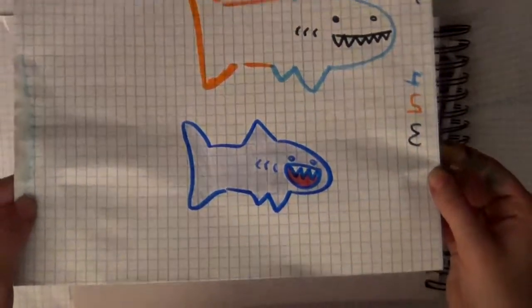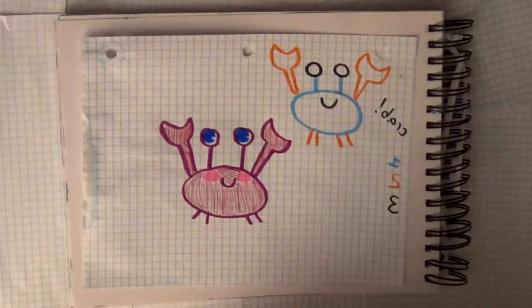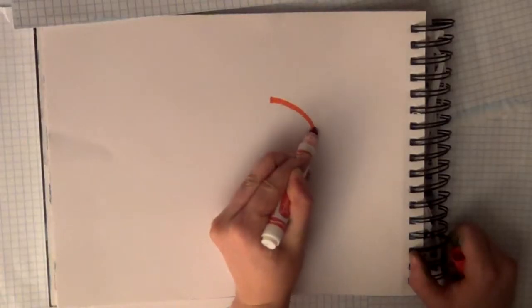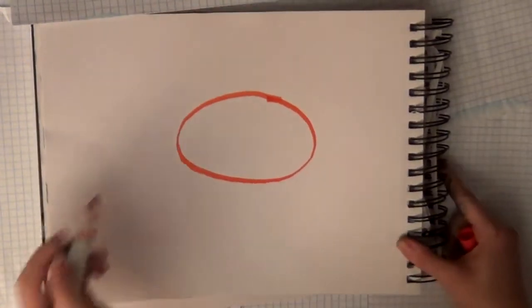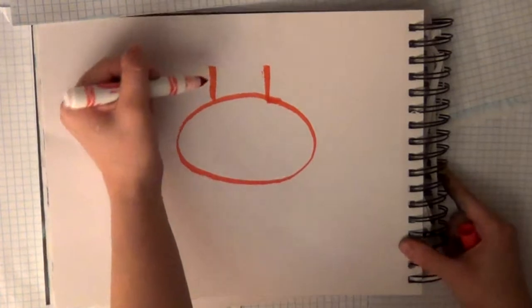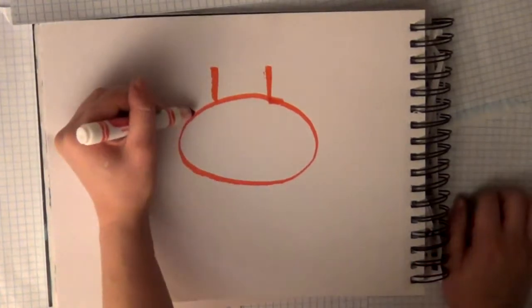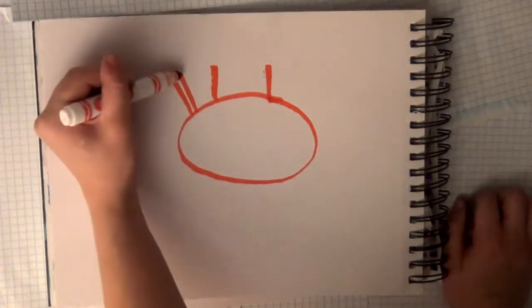How to draw a crab. Step number one: draw an oval. Next, you're going to draw two straight lines upwards. After that, you're going to draw his claws on the left and the right side of the two straight lines that you just drew.